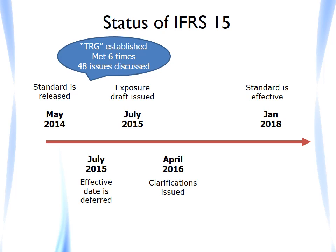After the standard was issued, the boards established the Transition Resource Group, or more commonly referred to as the TRG, to support the implementation of the standard. The group was made up of various representatives of the boards and various other key stakeholders. One of the objectives of the TRG was to inform the boards of implementation issues to help the boards determine what, if any, action should be undertaken to address any interpretation or implementation issues identified with the standard. The TRG met six times since the standard was released and discussed 48 issues submitted to them from various stakeholders.